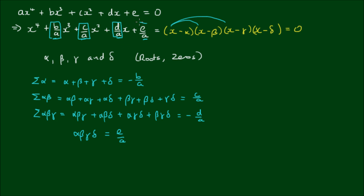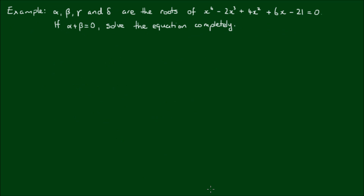So these are all of the relationships between the coefficients of the polynomial and the four roots. Note that since we have a fourth-order polynomial, we would normally expect to get four roots. Knowing this, let's do an example.